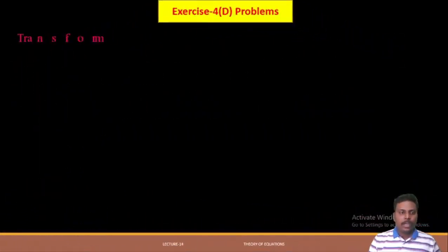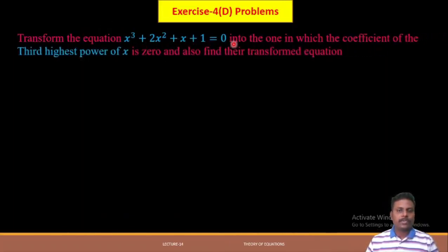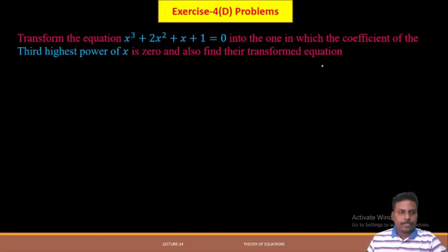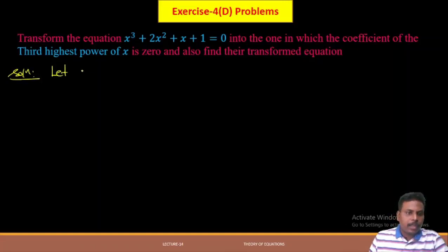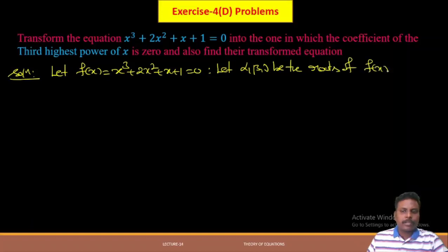Let us solve one more problem. Transform the equation x³ + 2x² + x + 1 = 0 into the one in which the coefficient of the third highest power of x is 0, and also find their transformed equation. Let f(x) = x³ + 2x² + x + 1 = 0. Let alpha, beta, gamma be the roots of f(x) = 0.